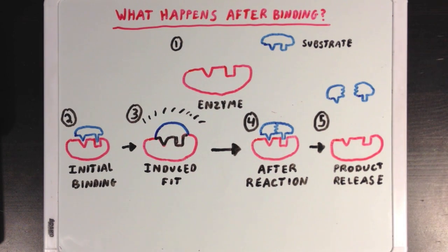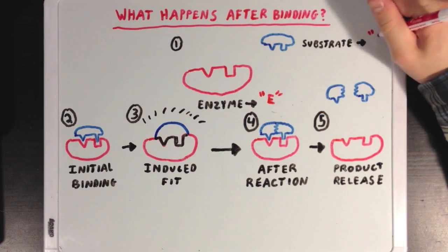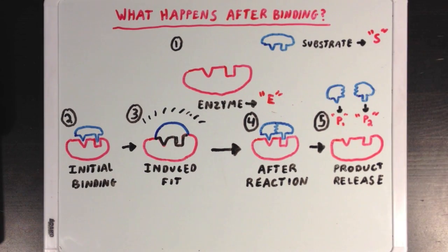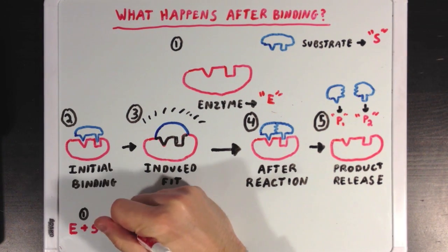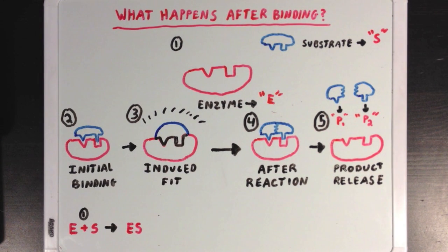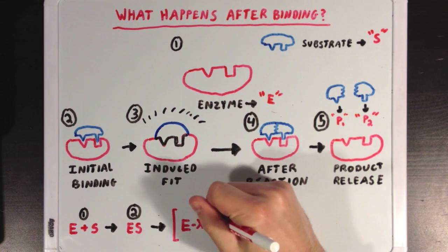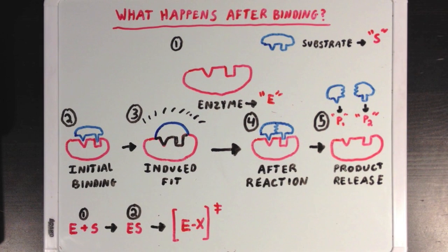Now let's look at this from a slightly different angle. I'm going to label the enzyme as E, the substrate as S, and our two products as P1 and P2, and represent this series of events as steps in a sequence of reactions. Stage 1: E and S are separate. Stage 2: E and S bind to form an enzyme-substrate complex, ES. What's really interesting is that in the next step — the induced fit of stage 3 — we're actually at the transition state of the entire reaction.